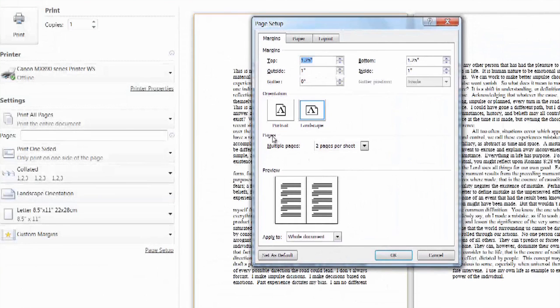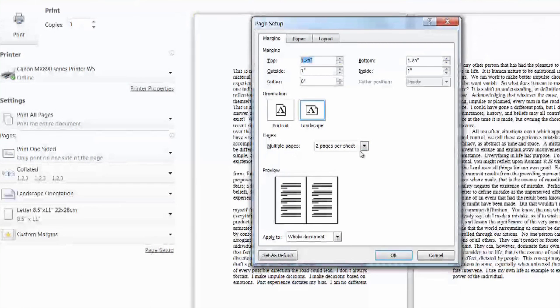Once we're in our page setup, you can see under the pages there's multiple page selections, two pages, and the last option is a book fold.